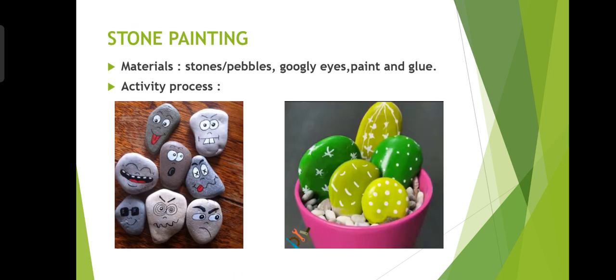The next activity is stone painting. Materials required: small stones or pebbles, googly eyes, paint, and glue. Activity process: the children take small stones, stick on the googly eyes, and paint them as they wish, creating figures as shown in the picture.